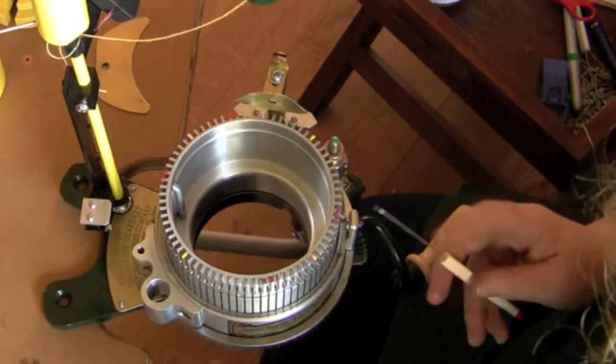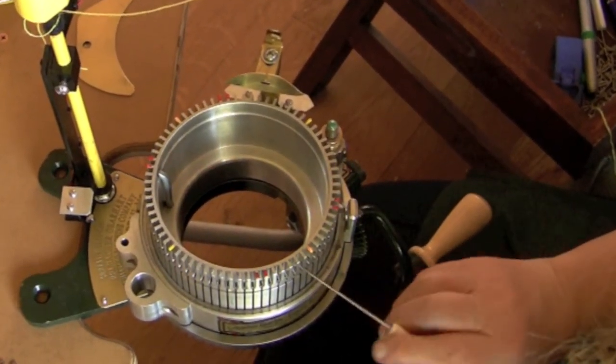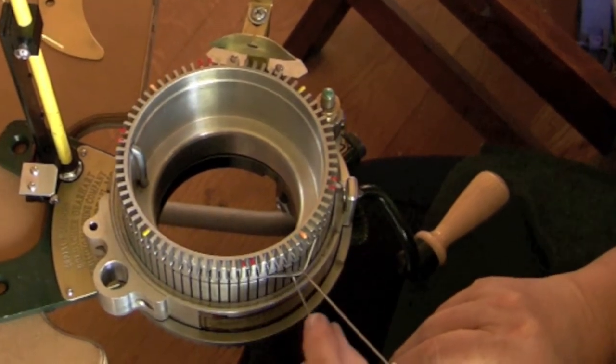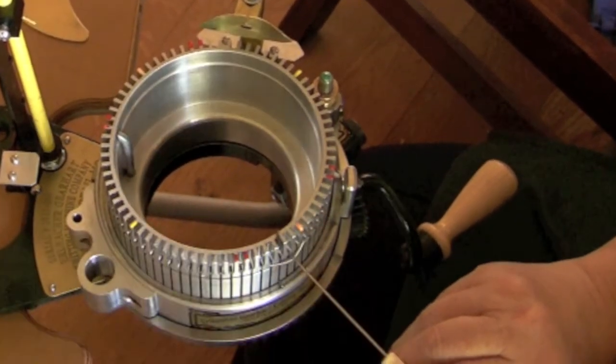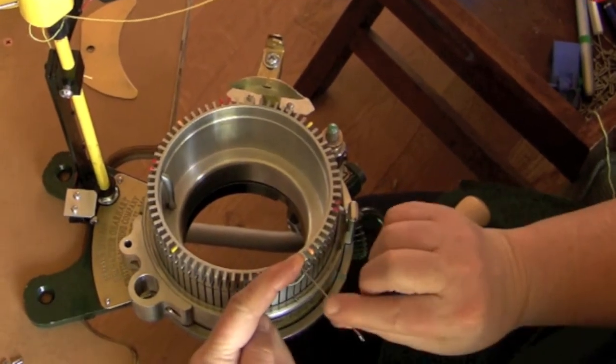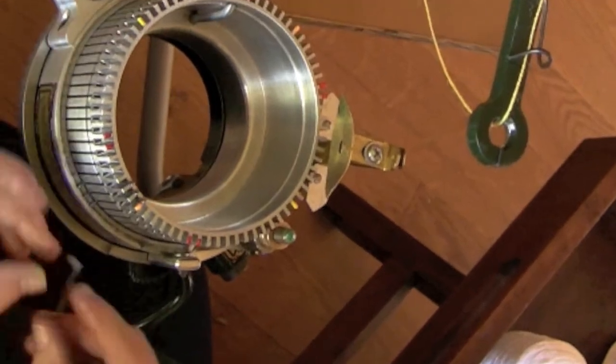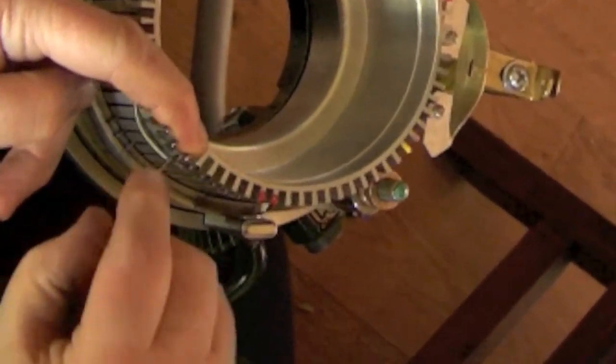To put needles back in, pull the cylinder spring out just enough to put the first needle in. Once that first needle is in, tug on it, push it out a little bit, and then slip the next needle in. Continue around in that way.